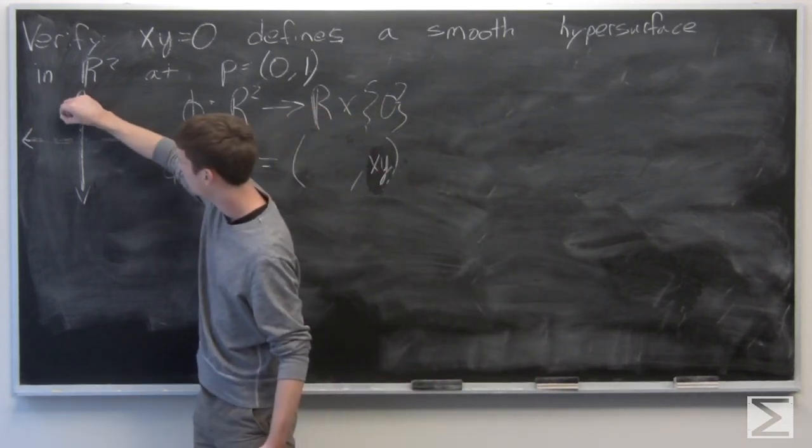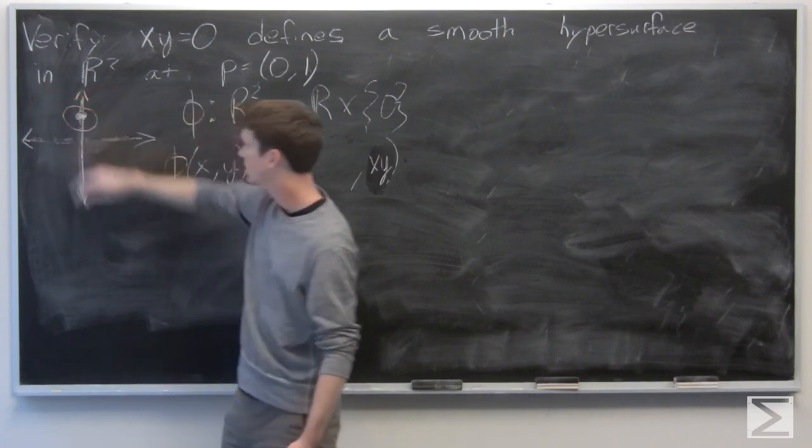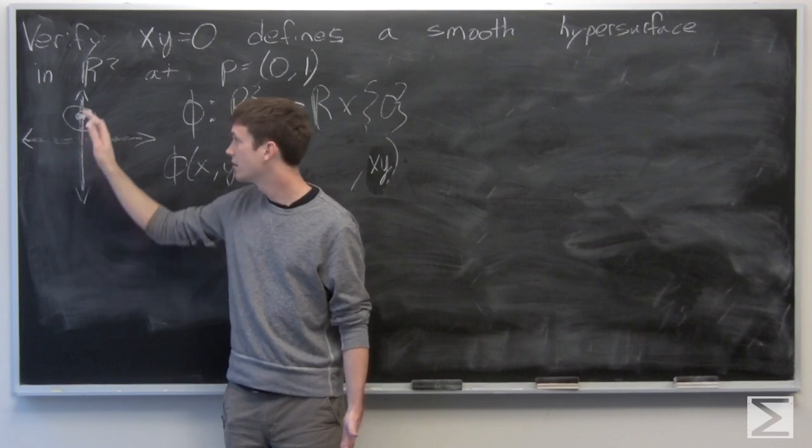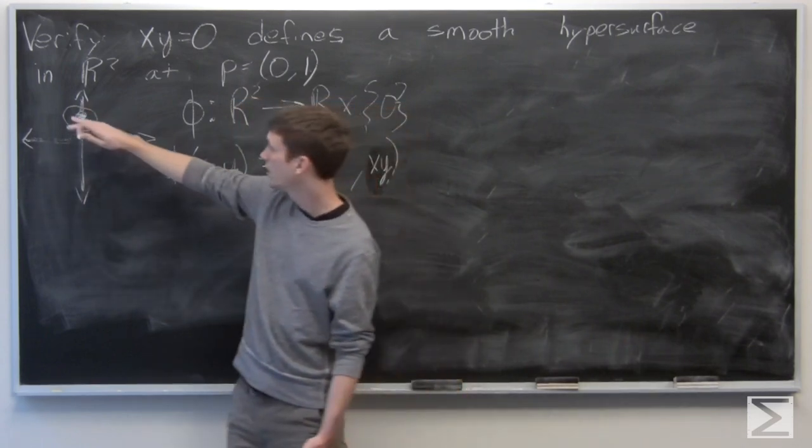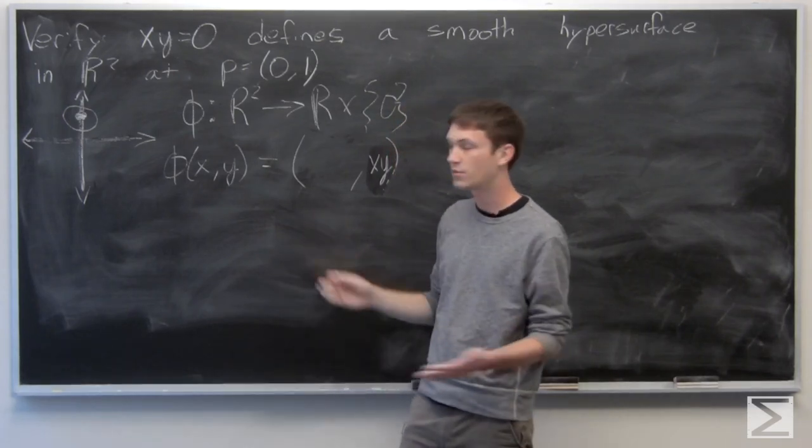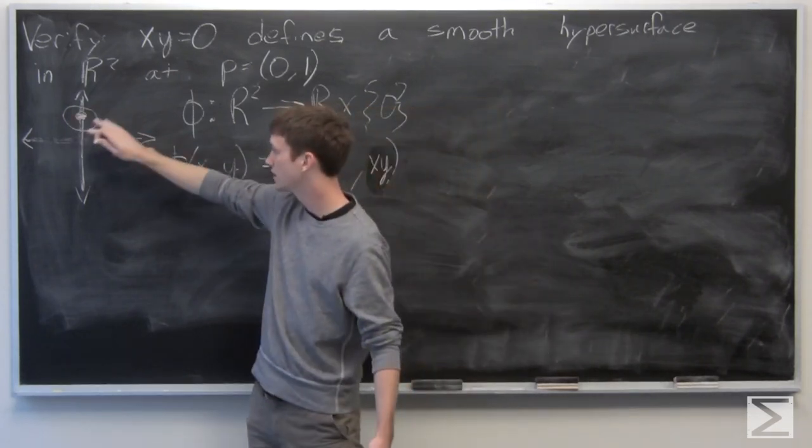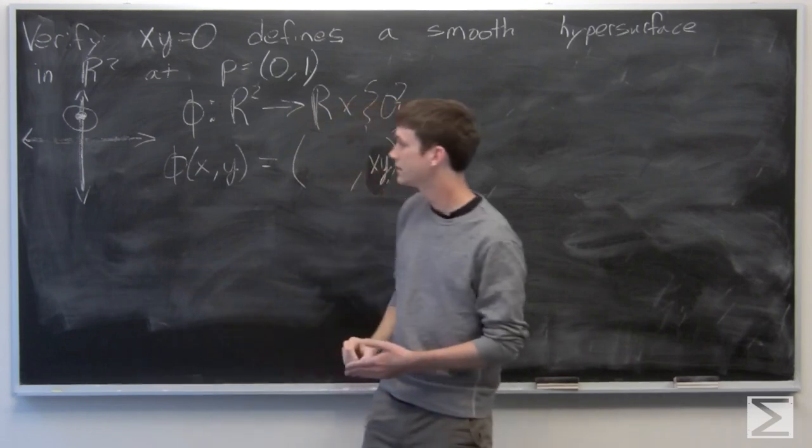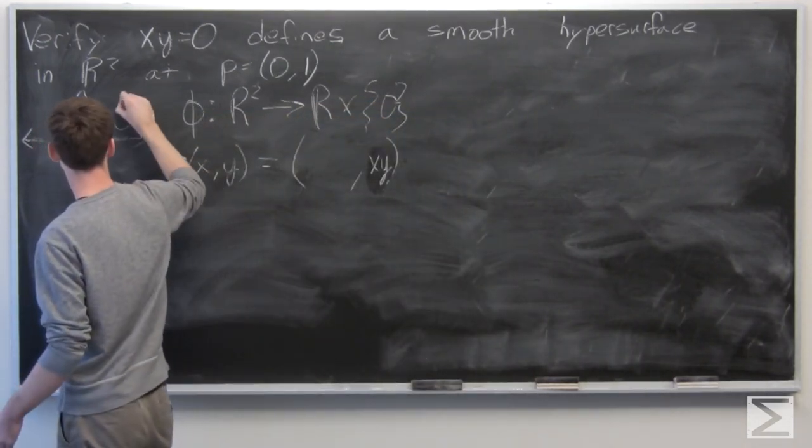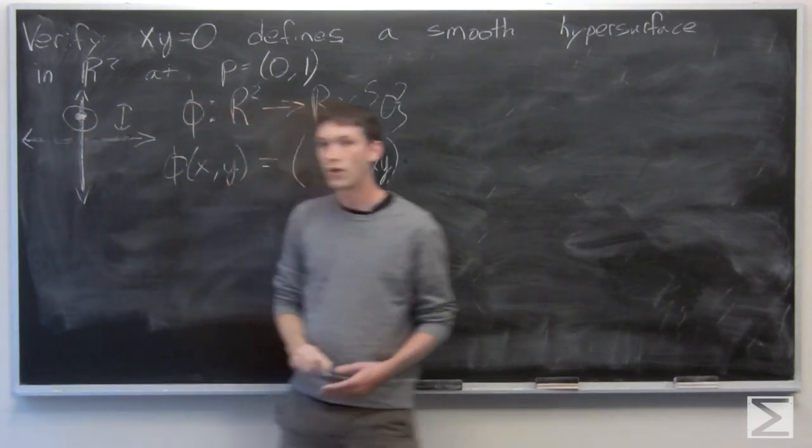So if we look at taking any open set where it intersects with xy equals 0, it will produce around this point any subset. It could be big, it could be small. In this case, we've chosen it to be smaller than the x-axis. So we see that it produces an open interval on the y-axis.